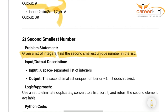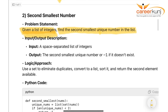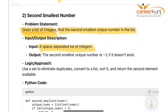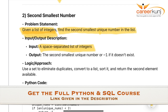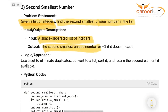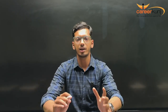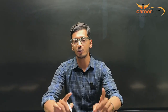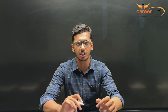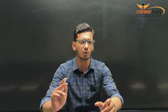The input is a space-separated list of integers. The output is the second smallest unique number, or minus one if it doesn't exist — for example, if all values are the same, there is no second smallest unique number. The approach: first remove all repetitive numbers using a set, then sort the unique values, and return the second element.